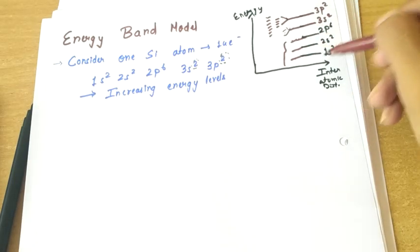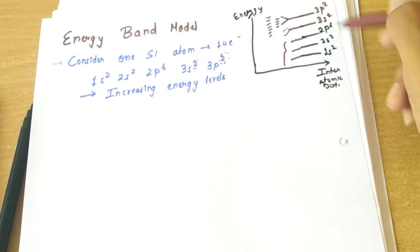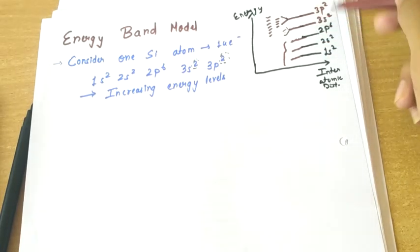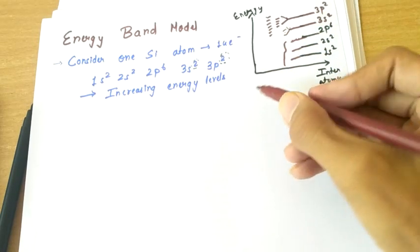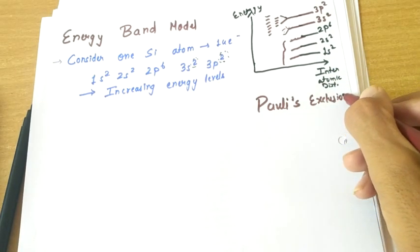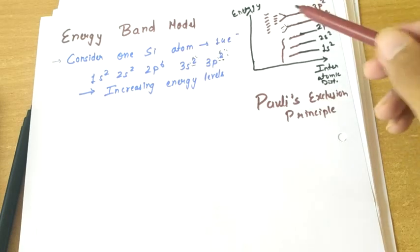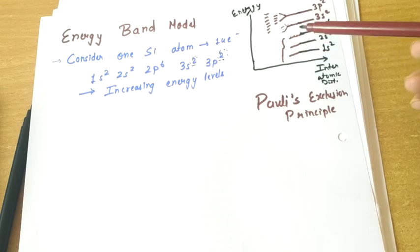The inner levels like 1s2 and 2s2 will also split but only at very small interatomic distances because they are deep inside. The outer valence orbitals split first. We are not concerned with the inner electrons — only the valence electrons matter. This splitting occurs because of Pauli's exclusion principle.